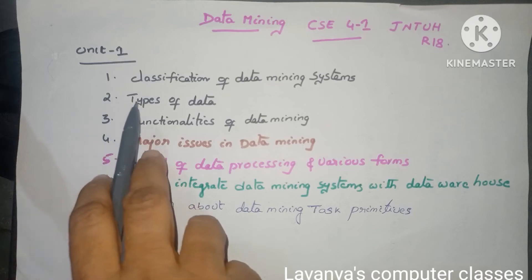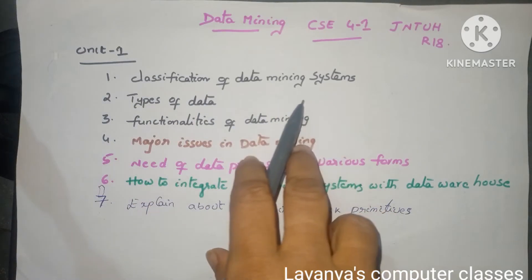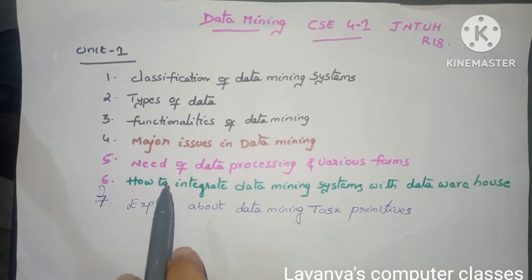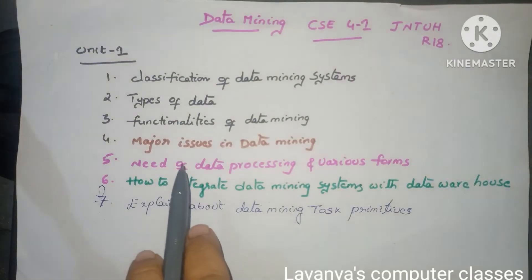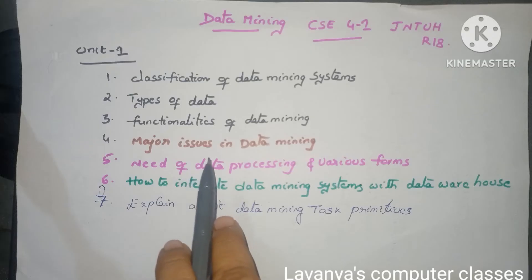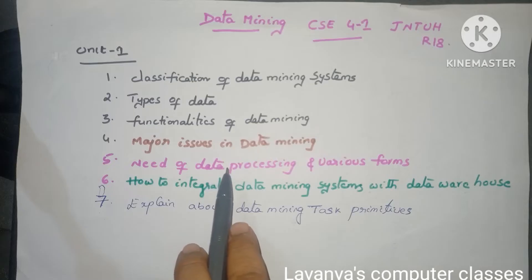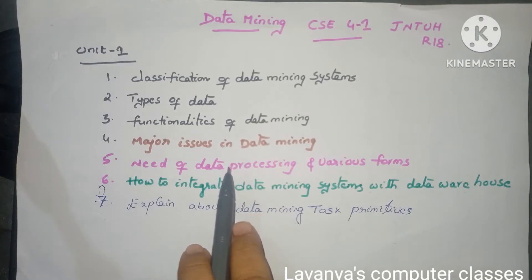In unit 1, the important questions are: classification of data mining systems — what is data mining and what are the different types of data mining system classification. The second question is what is data and explain the different types of data, which is also very important. Next, what are the functionalities of data mining — that is also an important question.